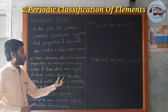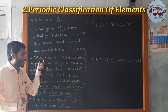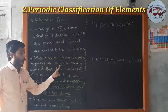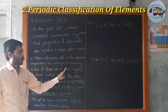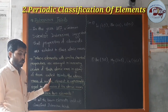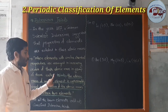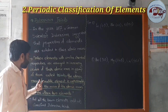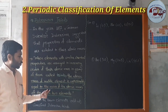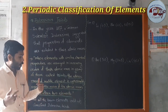These groups are called Triads. The final definition: when elements with similar chemical properties are aligned in increasing order of their atomic mass in a group of three, they are called Triads. Now, what is the law of Dobereiner's Triads? The atomic mass of the middle element is approximately equal to the mean of the atomic masses of the other two elements.